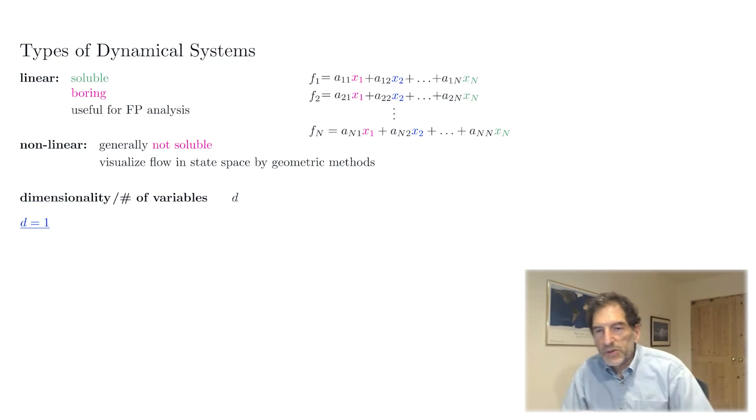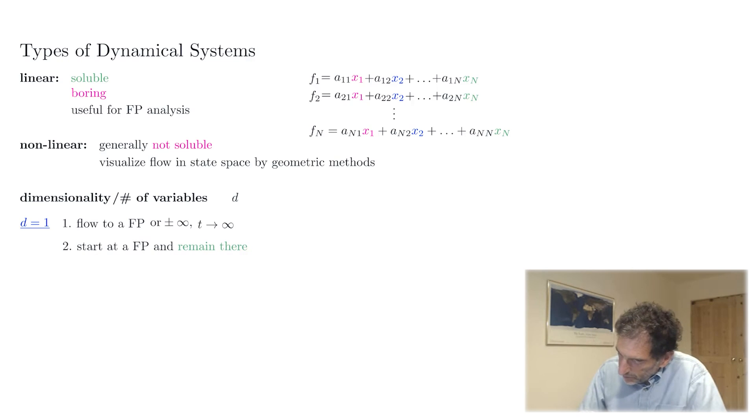One dimensional dynamical systems are easy to understand because the flow in state space is so constrained that what can happen in the long time limit is really quite limited. There's several things that can happen. One is that you can either flow to a fixed point or to plus or minus infinity at long times as T goes to infinity. Or even more trivial is that you could start at a fixed point and remain there. By the definition of a fixed point, you don't move. This characterizes all possible dynamical behaviors of a one dimensional system.